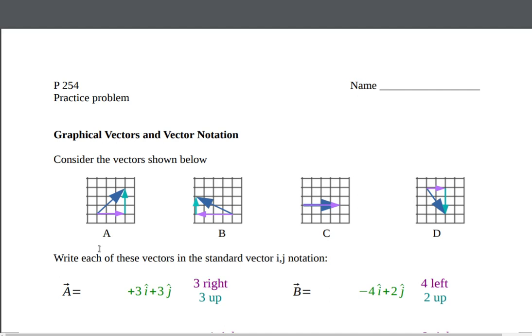You're counting the boxes. So A had one, two, three boxes to the right, and one, two, three boxes upward. B had four boxes to the left, and two boxes upward.